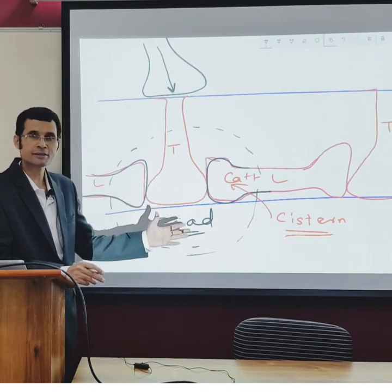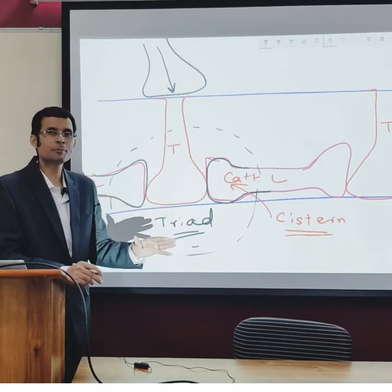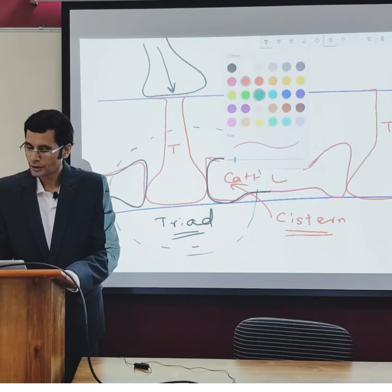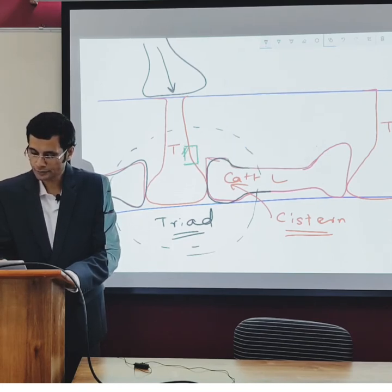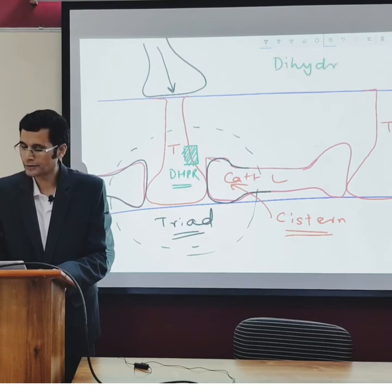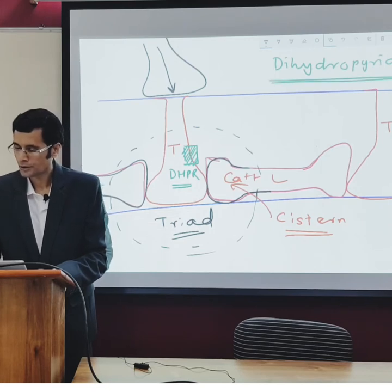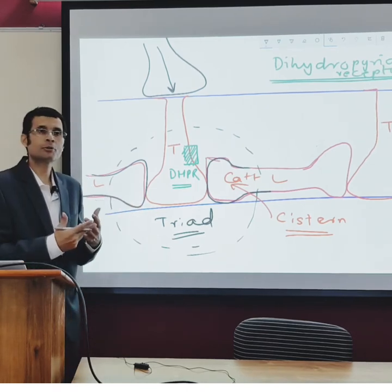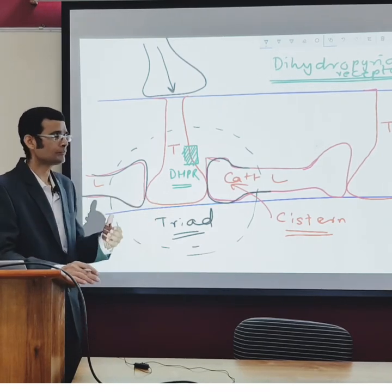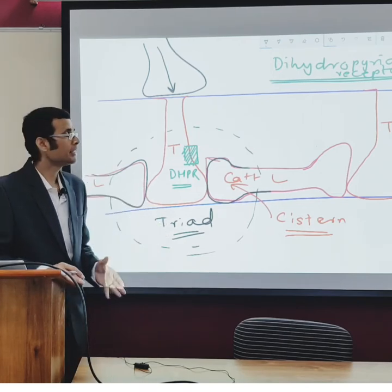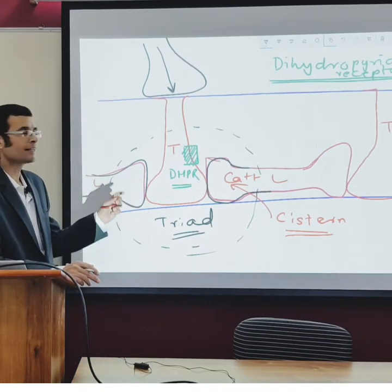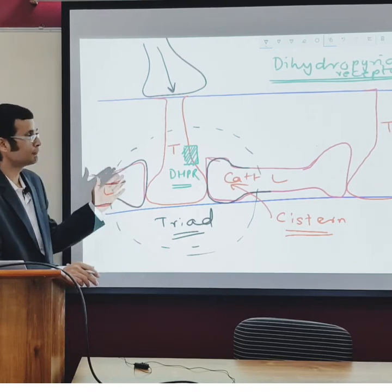Two important proteins are involved in EC coupling. In the membrane of the T tubule, there is a protein called DHPR — dihydropyridine receptor — named because it binds to a specific category of drugs called dihydropyridines, the calcium channel blockers. The DHPR is an L-type voltage-sensitive calcium channel with a voltage-sensing mechanism.